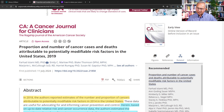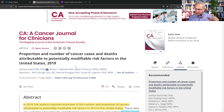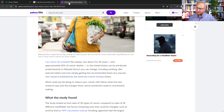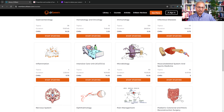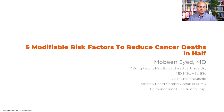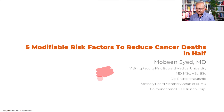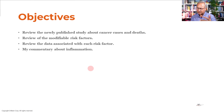The study is titled: 'Proportion and Number of Cancer Cases and Deaths Attributable to Potentially Modifiable Risk Factors in the US, 2019,' published in CA: A Cancer Journal for Clinicians. I'm going to present summaries of these factors — I encourage you to look at the study itself for a thorough analysis. I have no conflict of interest.